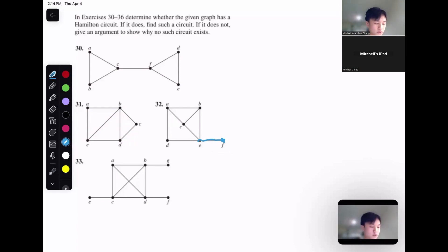And even if we didn't start at f and we started somewhere else, that means we'd still have to visit f at some point, right? So let's say we went here, but then from there we're stuck because we can't go back to a node that we already went to. So 32 also doesn't have a Hamiltonian cycle of any sort.